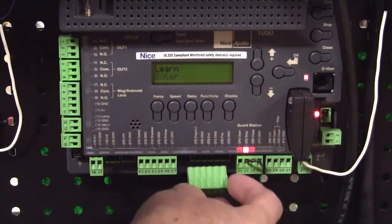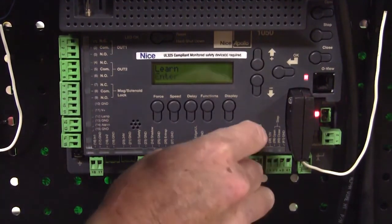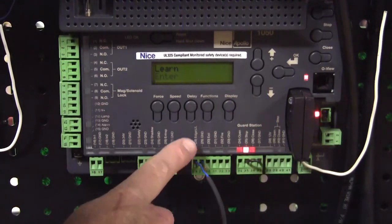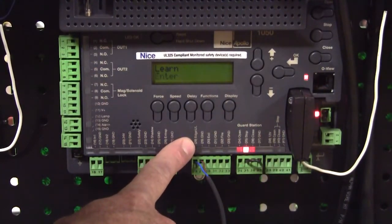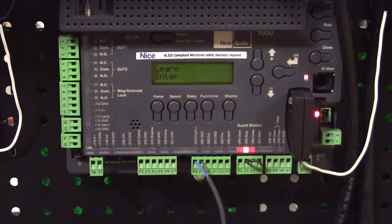Now the UL edge input is defaulted as a digital normally open input. That means it's looking for just a dry contact. So to change this input to a monitored entrapment input, we have to go into functions, go down to advanced settings.